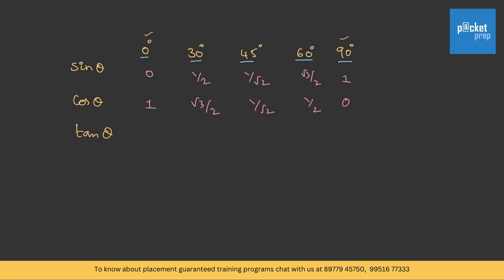For tan theta, we already know tan theta is sin theta by cos theta, so you can take the division of these two. This becomes 0, 1 by root 3, 1, root 3, and 1 divided by 0 is not defined. These values should be in your mind. If you are not thorough, please write them on a paper and try to practice them well.